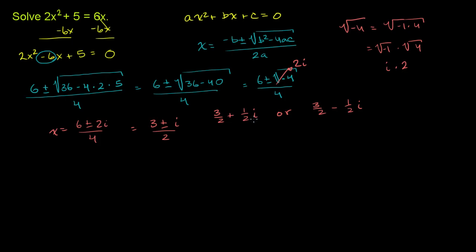Those are the two roots. Now I want to verify that these work. We can rewrite them as 3 plus i over 2 and 3 minus i over 2 — these are equivalent representations. Both forms, 3 plus or minus i over 2 and 3 halves plus or minus 1 half i, are equal representations of both roots.